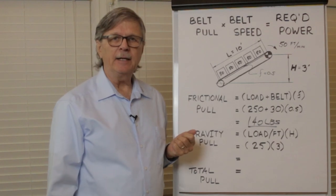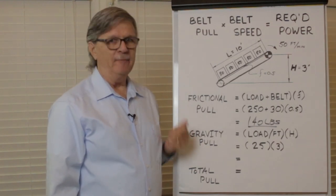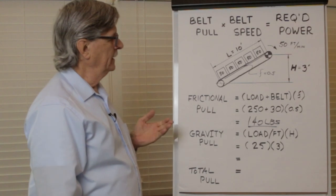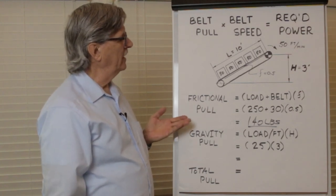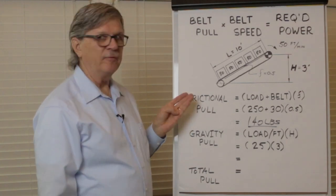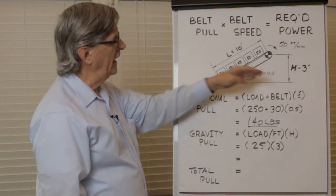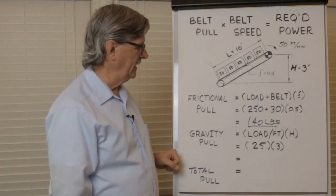Now let's calculate the required belt pull to overcome gravity. The pull required to overcome gravity equals the weight per foot of the load on the belt multiplied by the change in elevation of the conveyor.